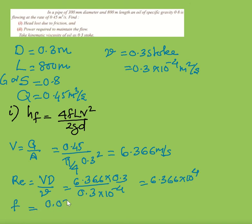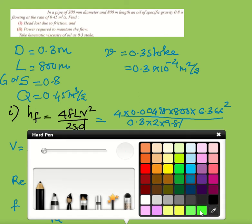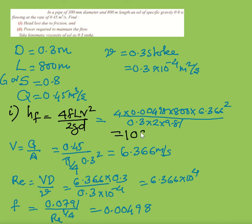Calculate Reynolds number, then friction factor f = 0.0791 / Re^(1/4) = 0.00498. Substituting into Darcy-Weisbach: HF = 4 × 0.00498 × 800 × (6.366²) / (2 × 9.81 × 0.3), giving HF = 109.72 meters.